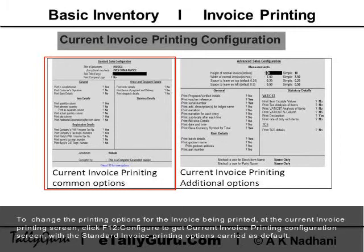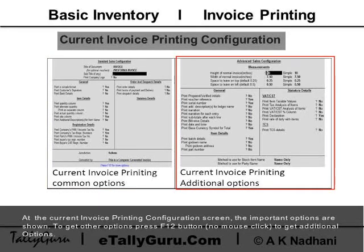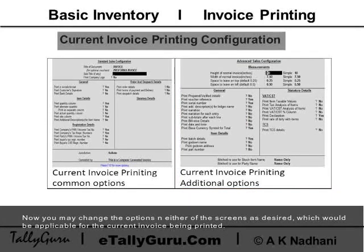The standard printing options are carried at the current invoice printing configuration screen. The important options are shown. To get other options, press the F12 button — no mouse click — to get the advanced options.